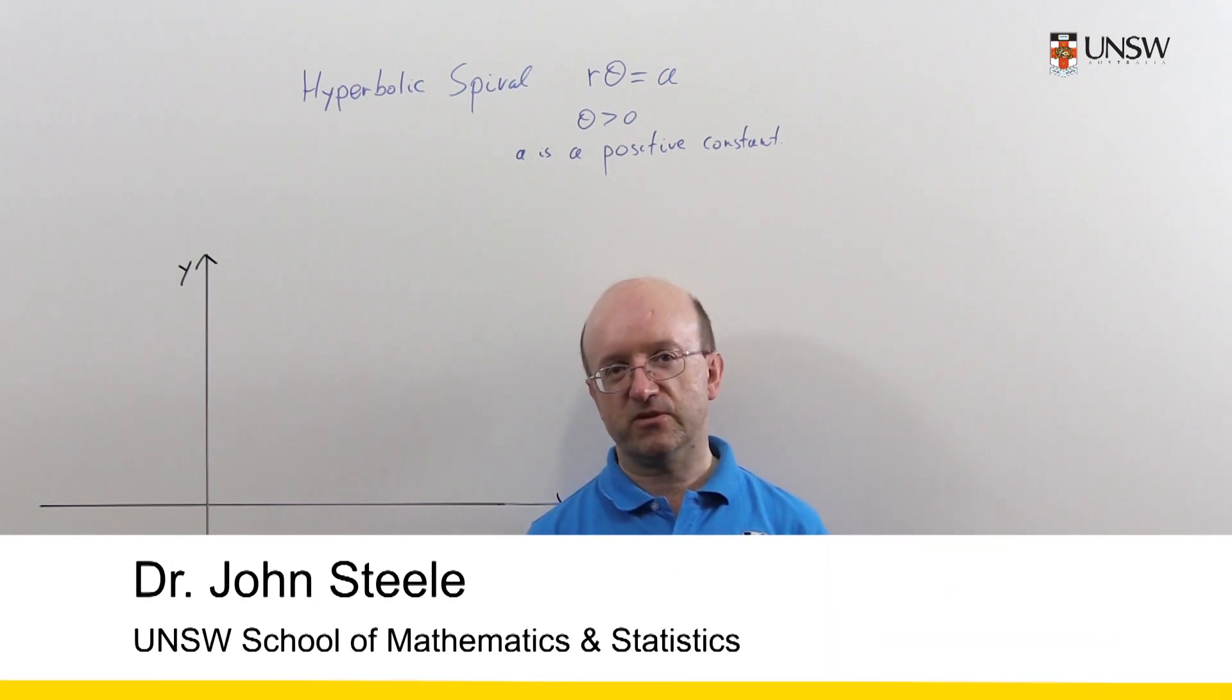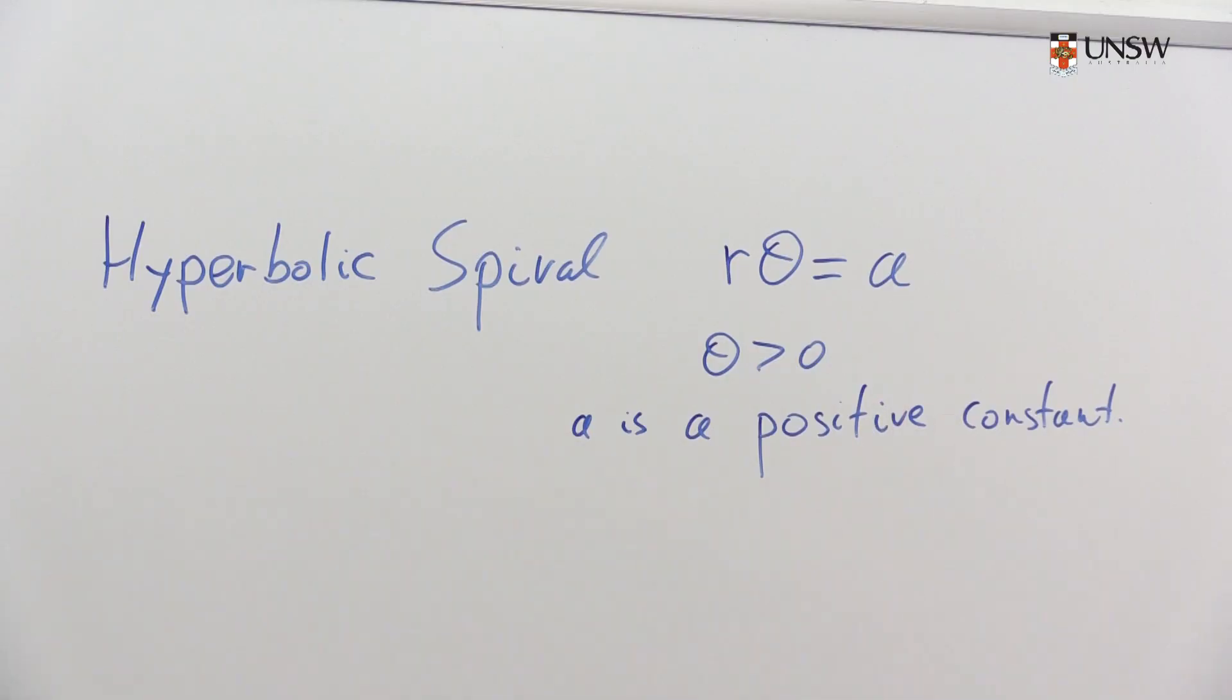In this next video we're going to look at sketching a curve given in polar coordinates, in this case the hyperbolic spiral r theta equals a where a is some positive constant and we restrict theta to be strictly positive.